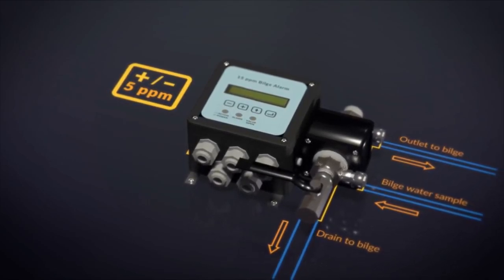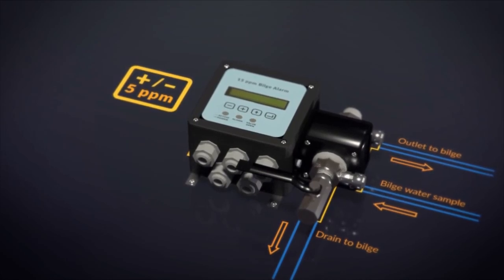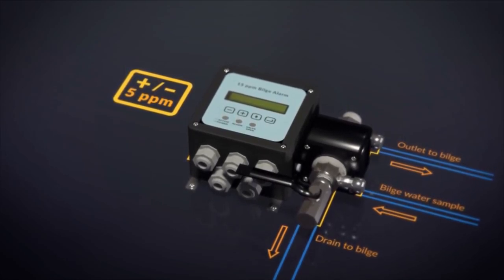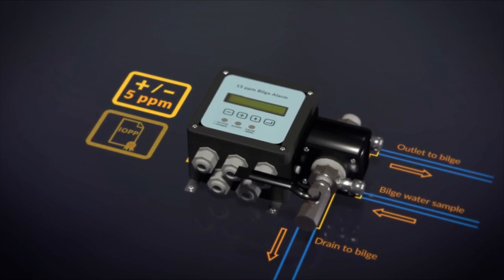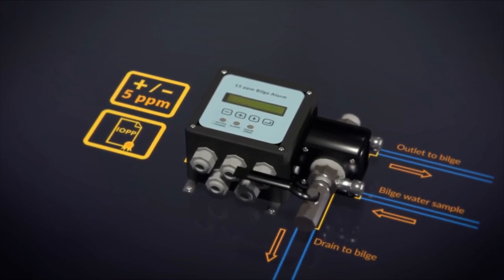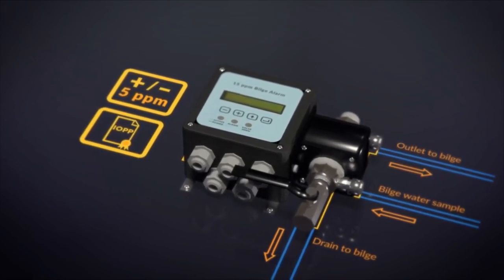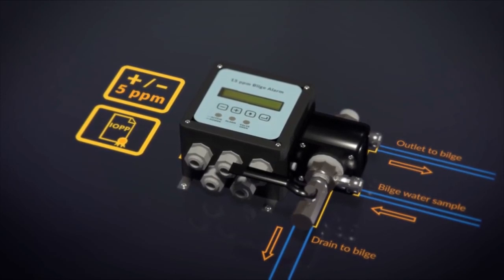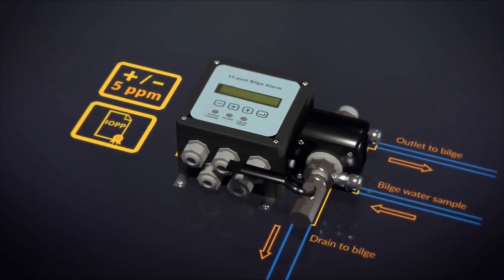The accuracy of the 15 ppm bilge alarms should be checked at the IOPP Certificate Renewal Surveys in accordance with the manufacturer's instructions. These accuracy checks can only be done by the manufacturer or persons authorized by the manufacturer.